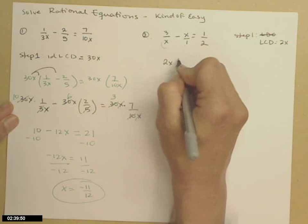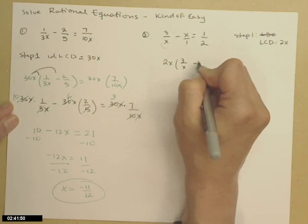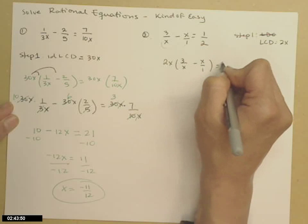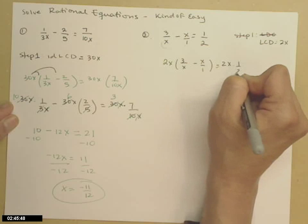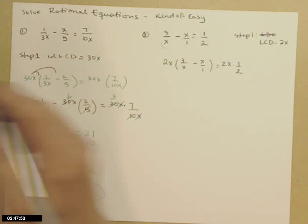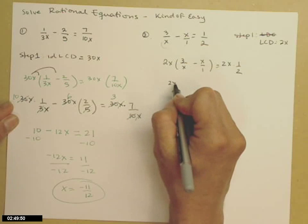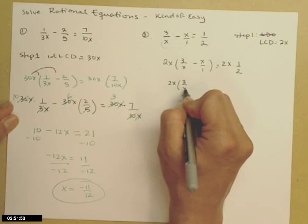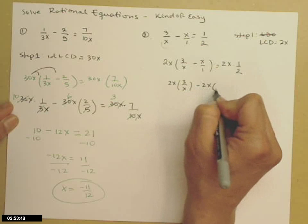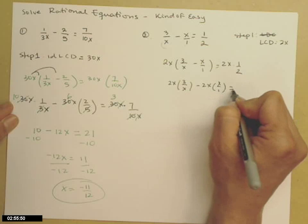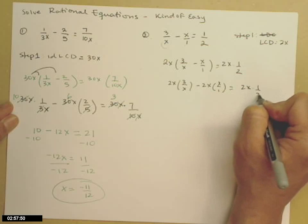I then multiply both sides of my equation by 2x. Distribute it on the left. We'll just multiply it on the right.